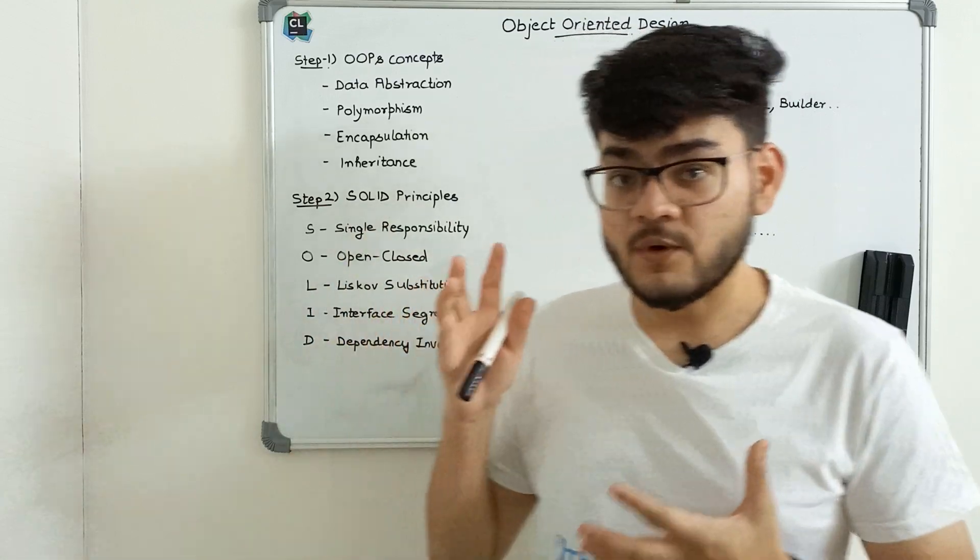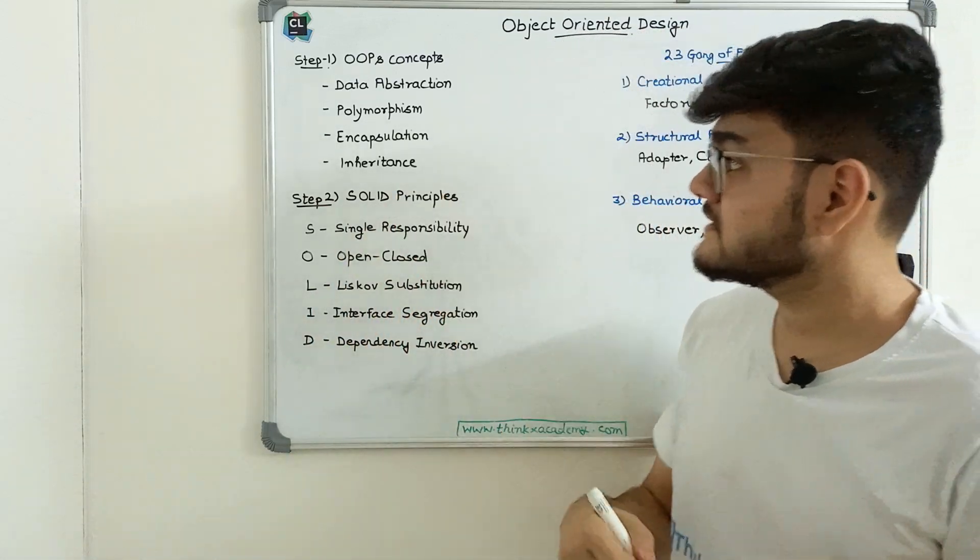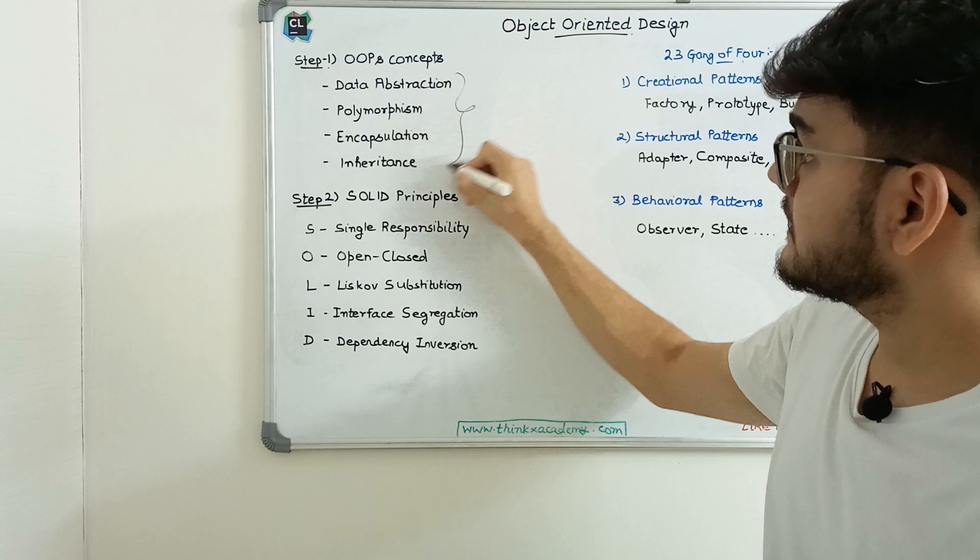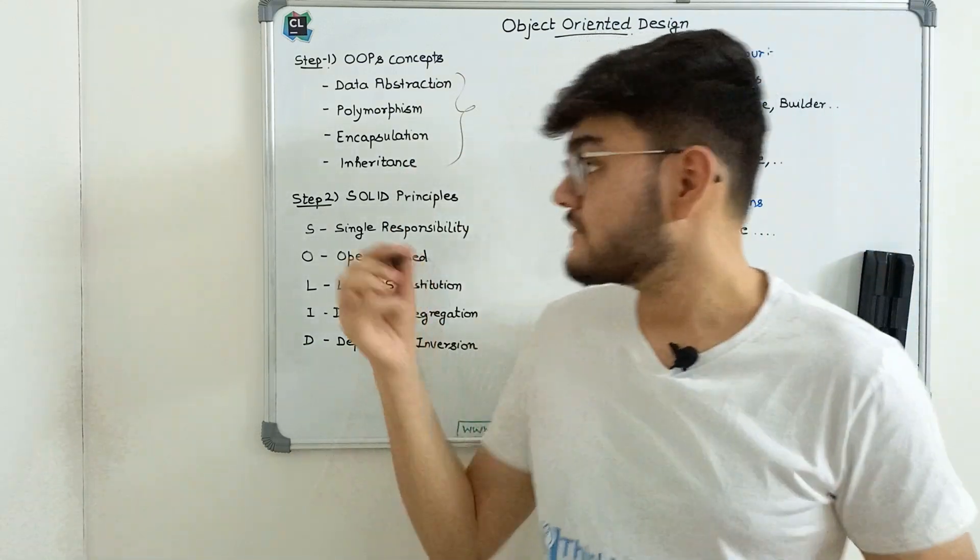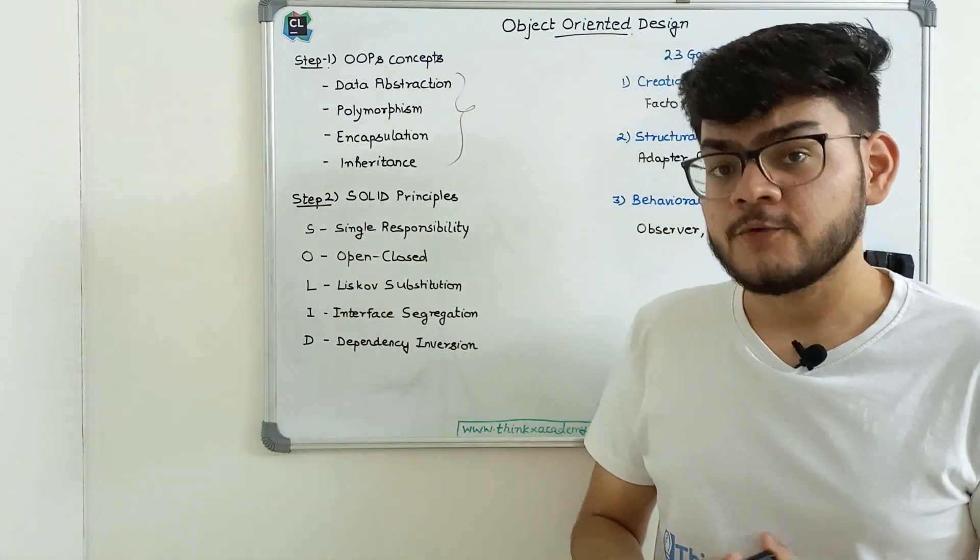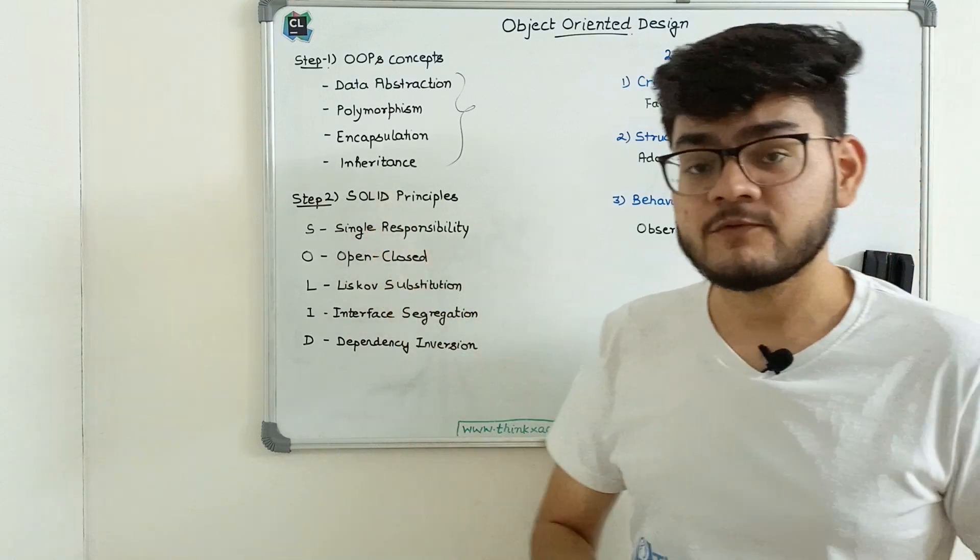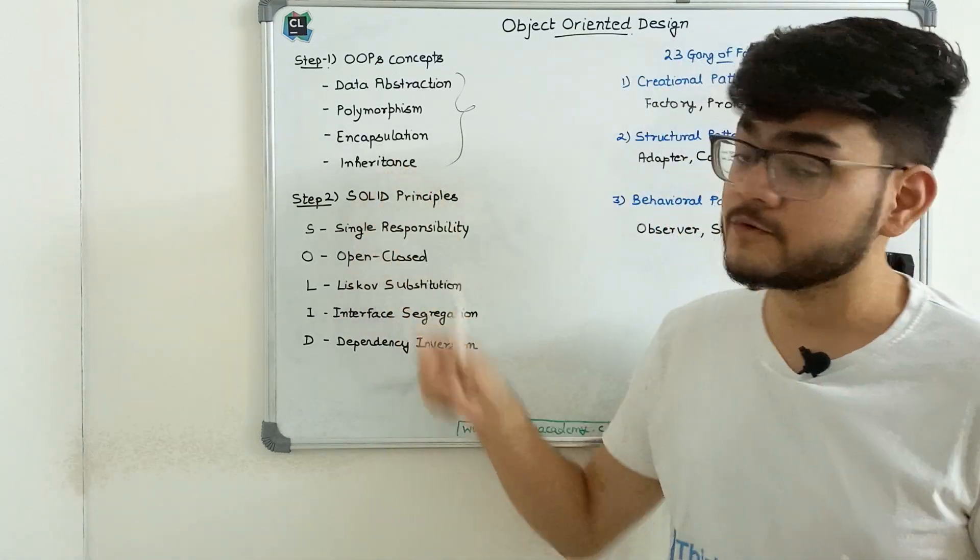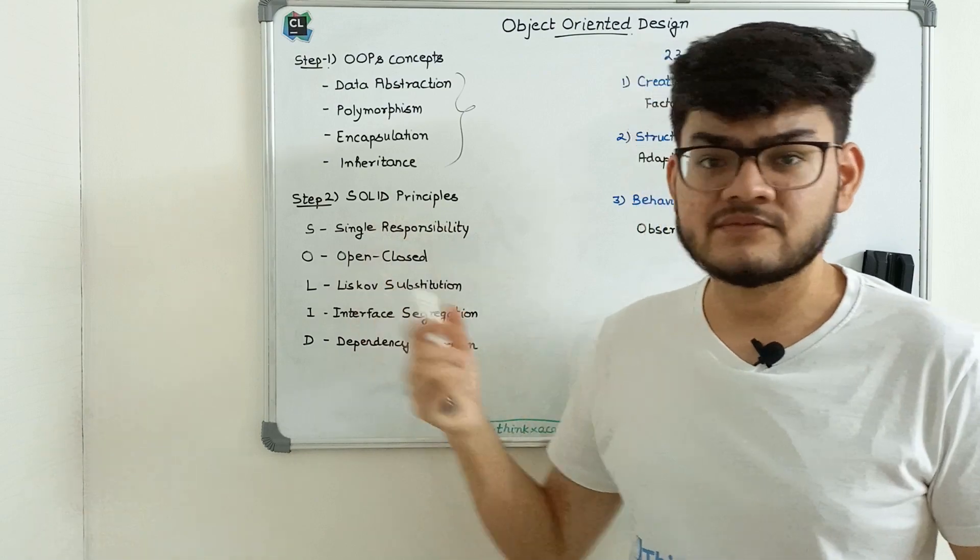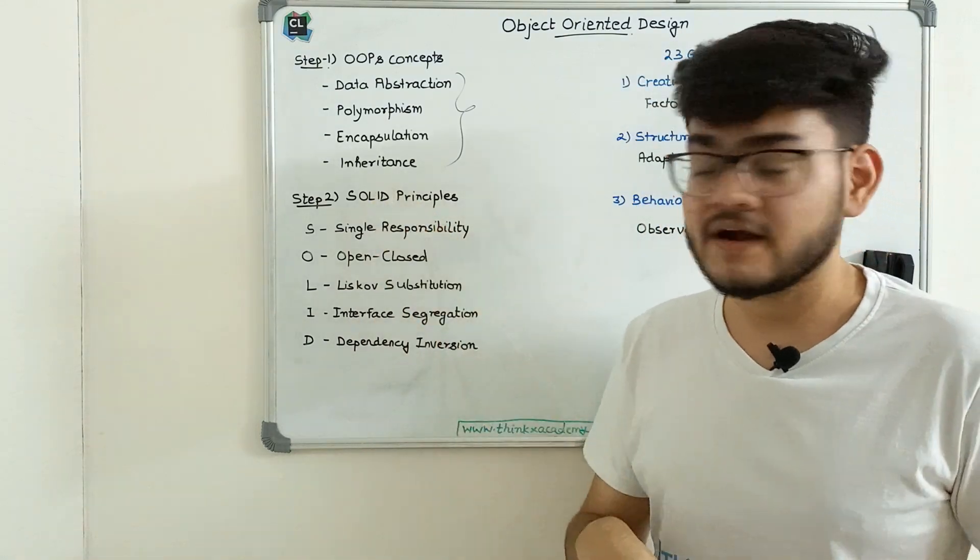The whole crux of object-oriented design lies within four concepts: data abstraction, polymorphism, encapsulation, and inheritance. Step one of this roadmap is to cover OOPs concepts—you can cover that in just one hour. I'll give the link to that video.